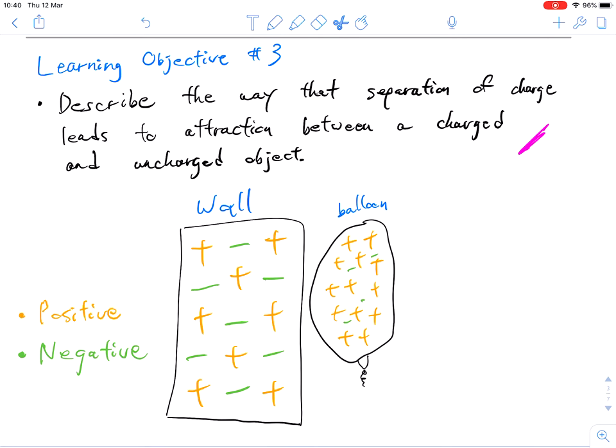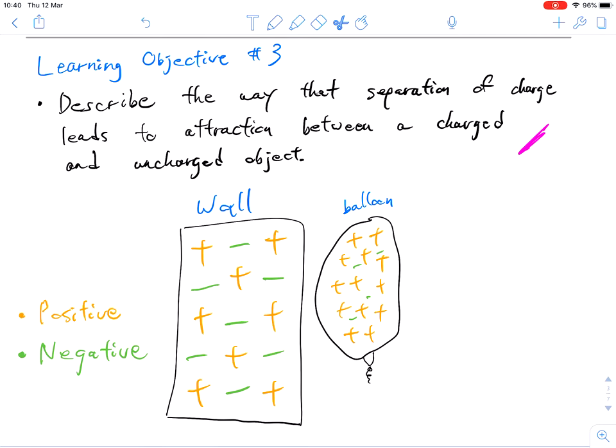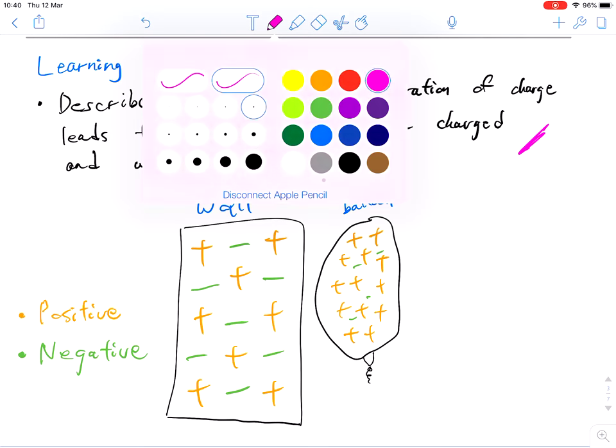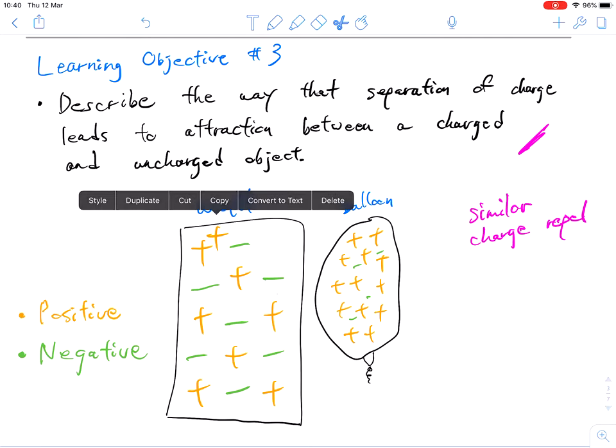So what we do is we bring our balloon towards the wall. Now we don't want it touching the wall. It appears to be touching, but really it isn't actually touching. It's very close. I'm just going to do it a little bit further away so we have a little bit of room.